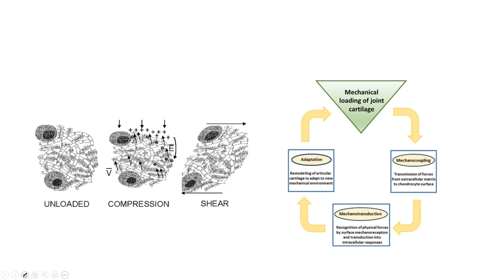Here's a schematic showing the loading regimes of articular cartilage. Dynamic compression of the extracellular matrix induces deformation of cells and the matrix, and all these different pressure gradients occur. This compression facilitates a mechanotransductive process that leads to the redevelopment and turnover of the ECM.